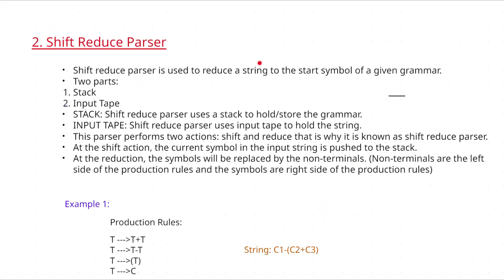What is shift reduce parser? Shift reduce parser is used to reduce a string to the start symbol of a given grammar. Whenever you want to reduce a string to the start symbol, you are going to use this shift reduce parser. How do you reduce that string? By using the grammar — the rules or production rules — you can reduce a particular string to the start symbol.